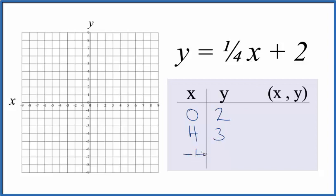And then negative four. Negative four times one-fourth, that's negative one plus two is just one. So these are the points that we'll graph for the equation y equals one-fourth x plus two.